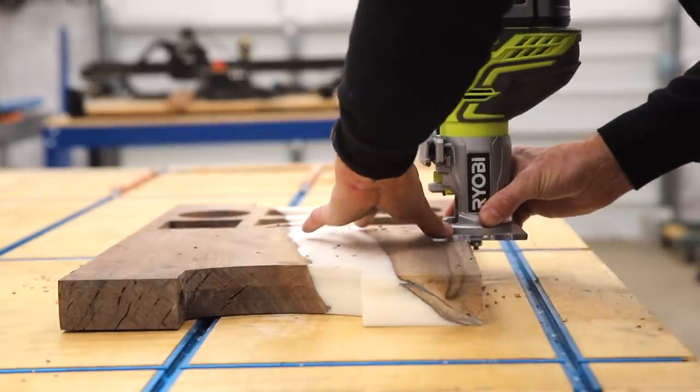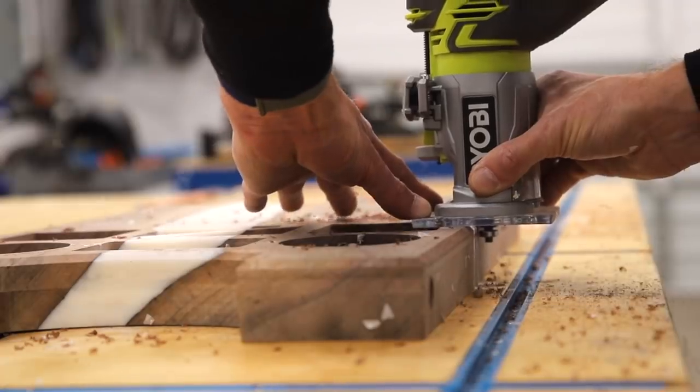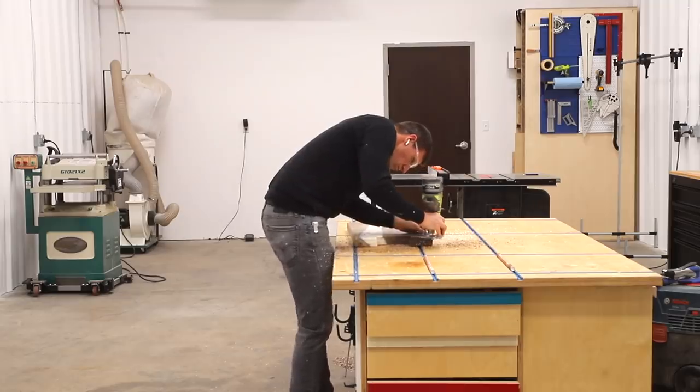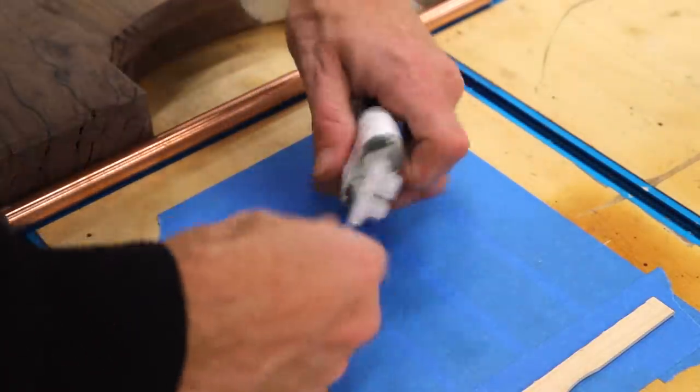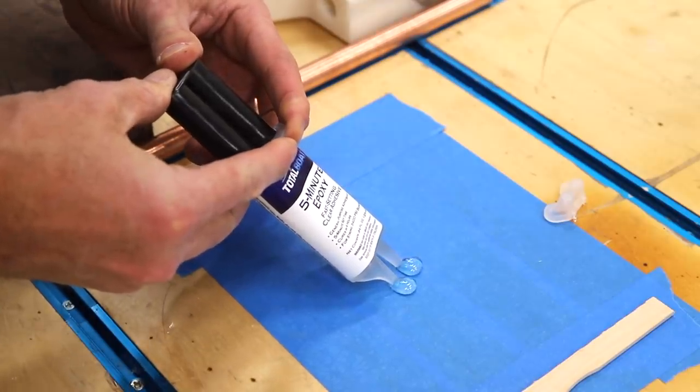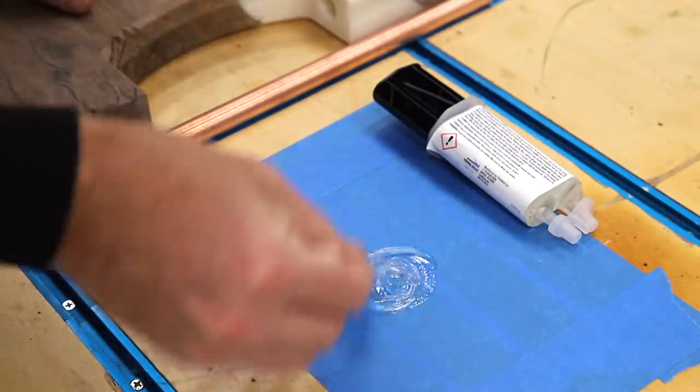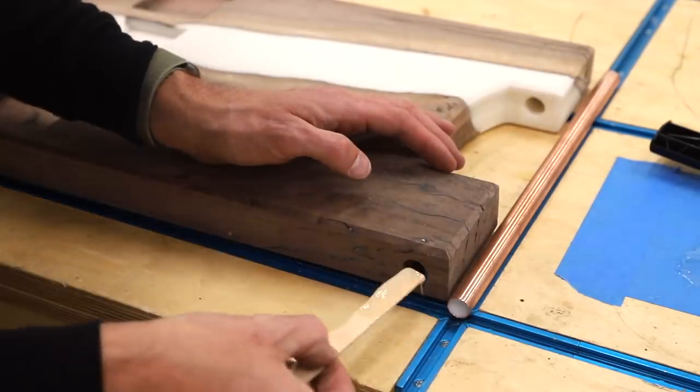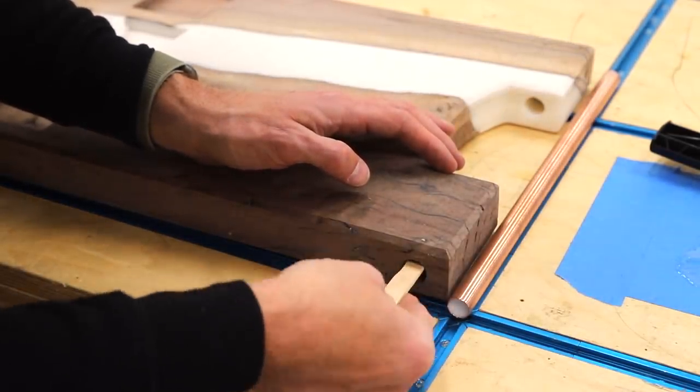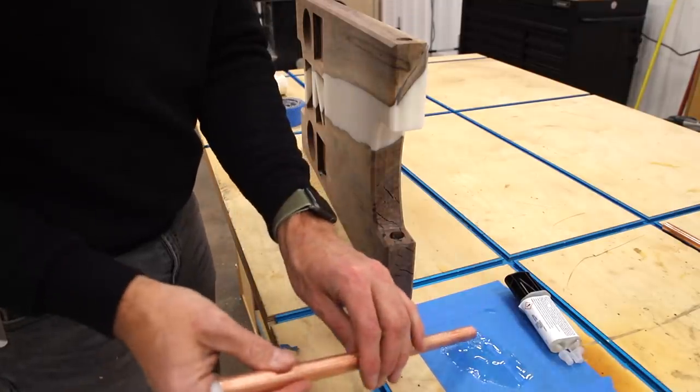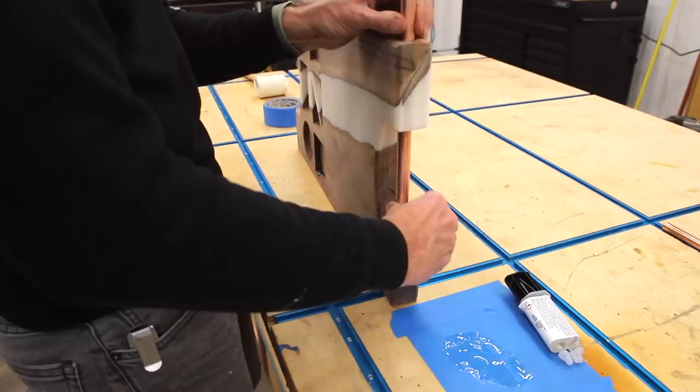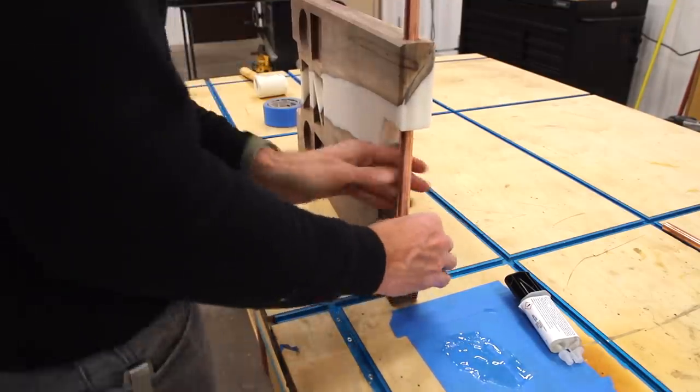Using a router with a 45 degree bit I gave the edge a light chamfer on the top and bottom. Next I mixed up some of this TotalBoat 5 minute epoxy and this is what I'll use to attach the handles on each end.